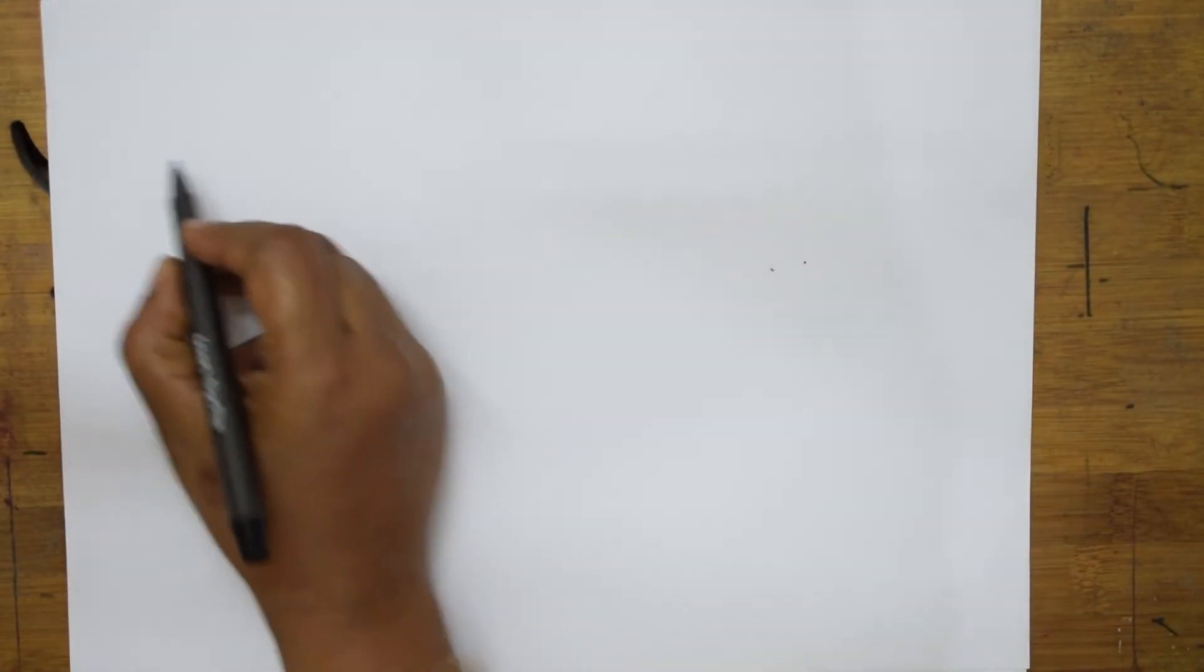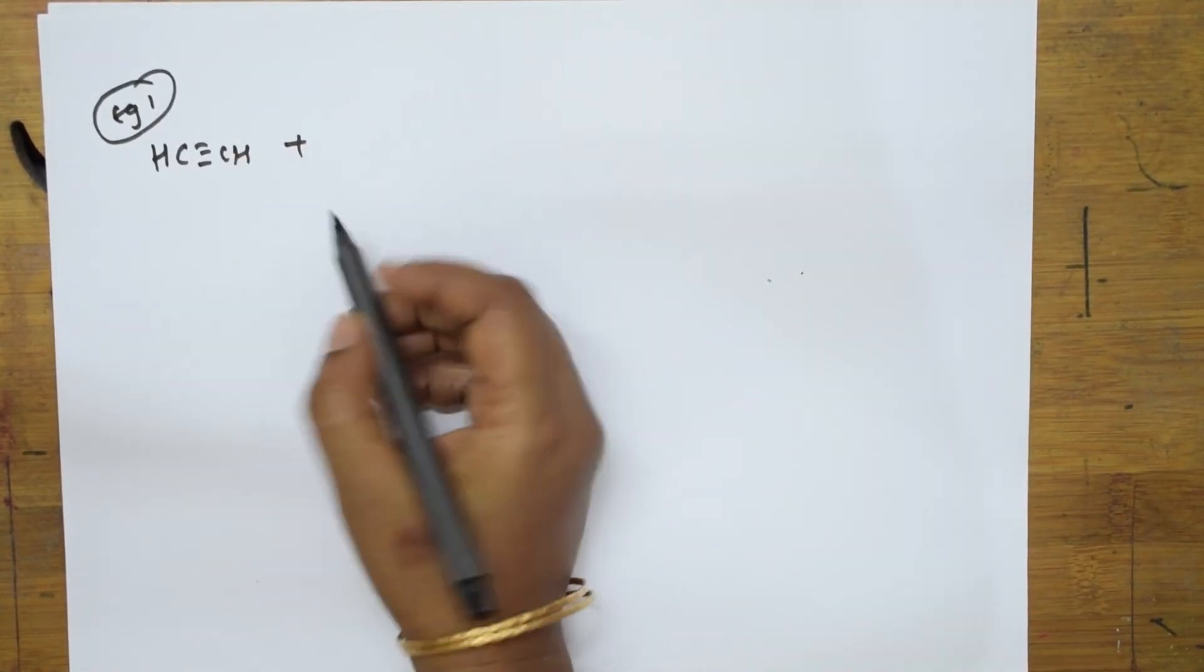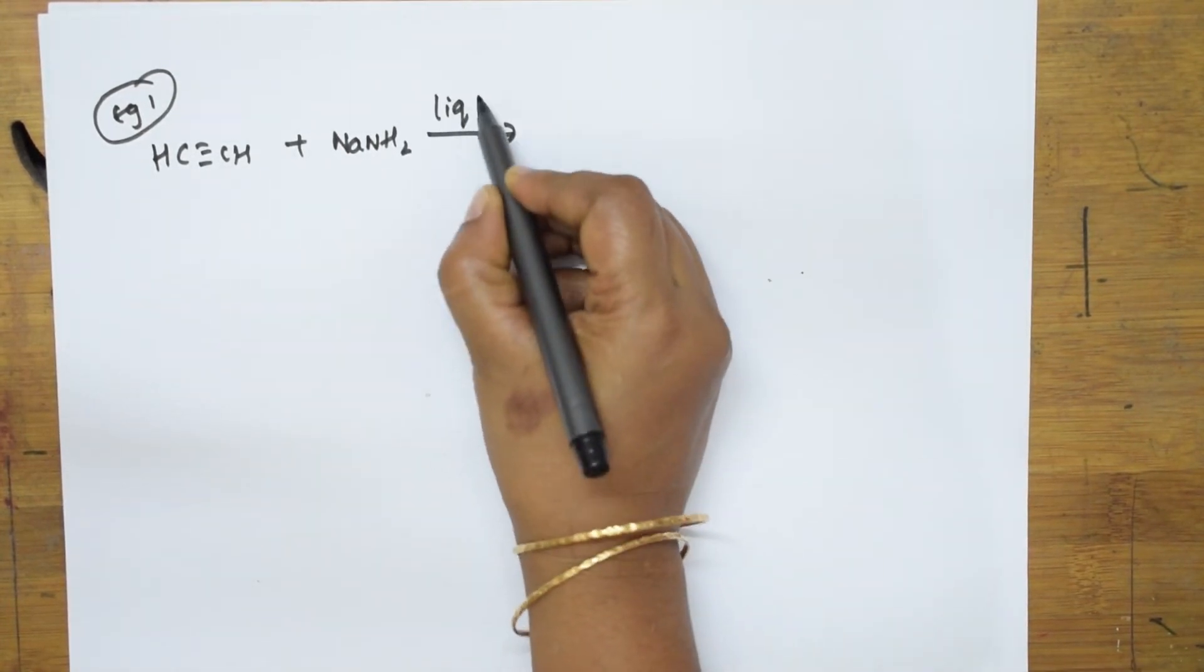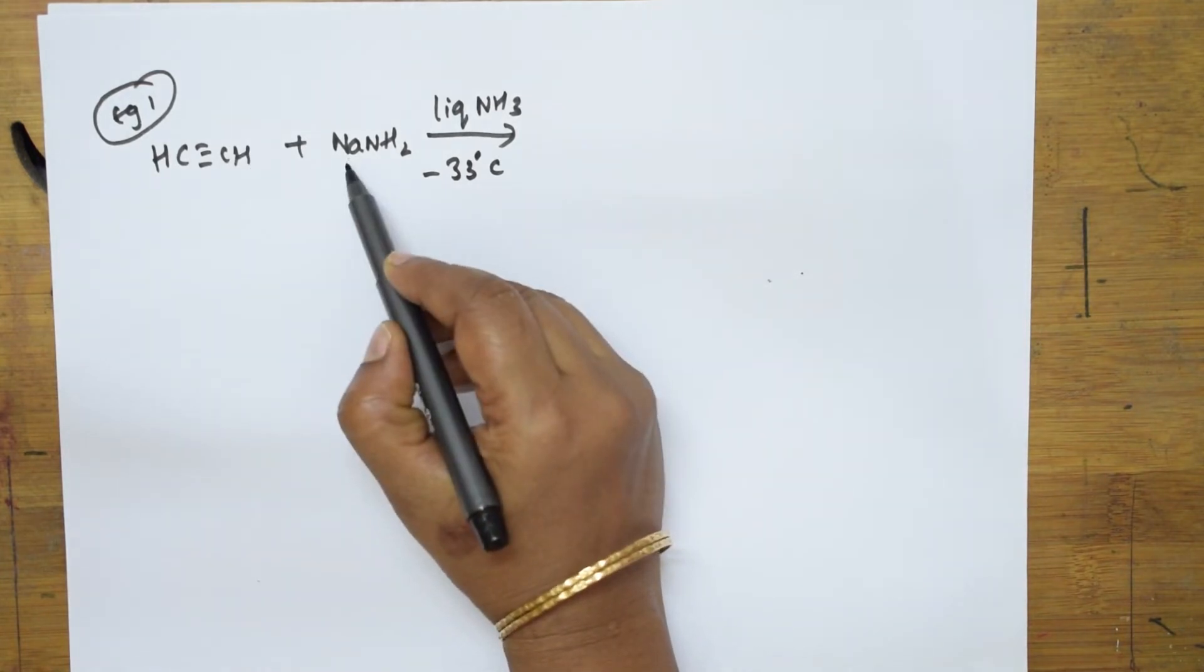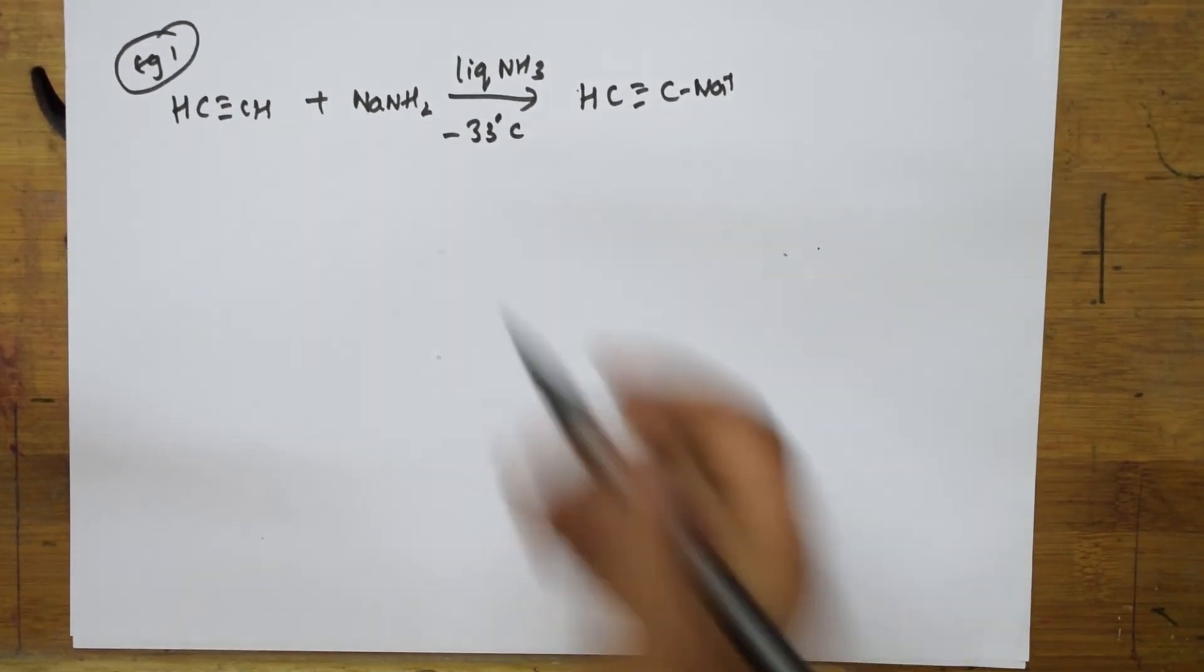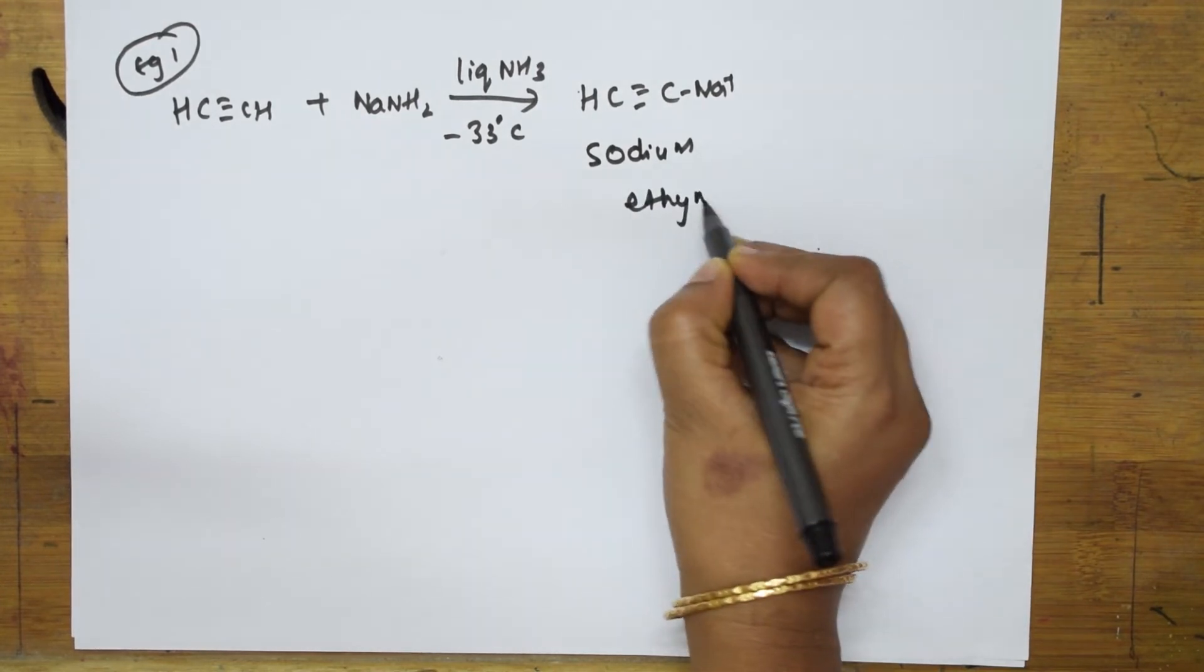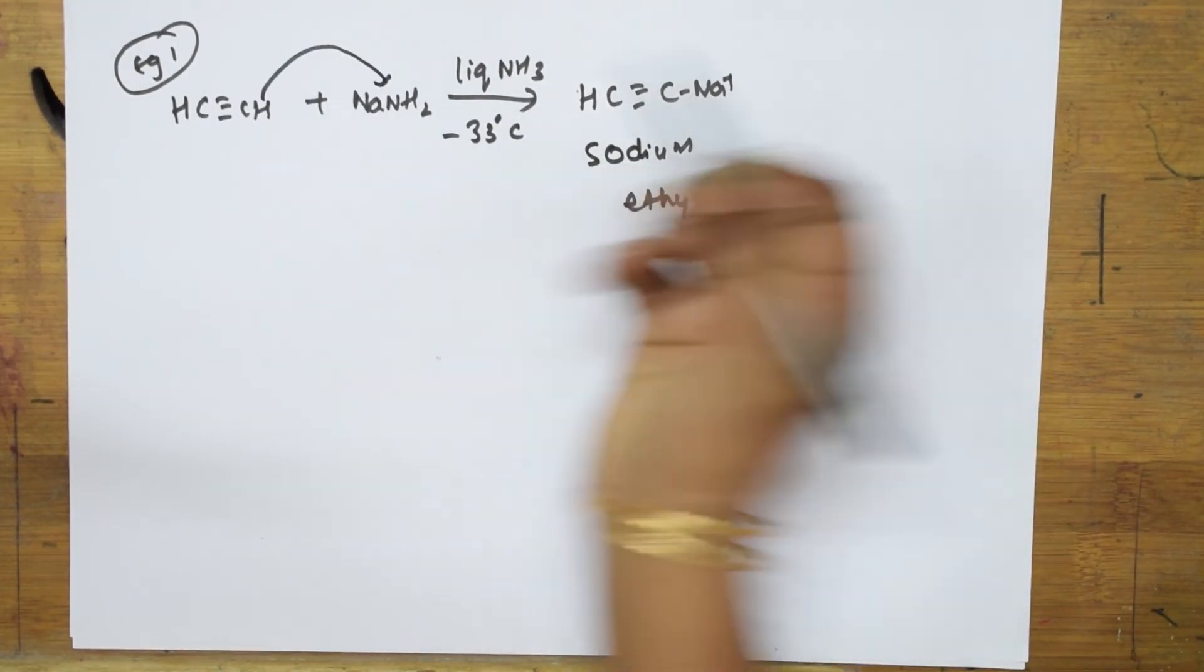With this mechanism let's take examples. Suppose I take acetylene. This is example one. I'm going to introduce NaNH2 sodium amide in the presence of liquid ammonia at minus 33 degrees centigrade. This hydrogen is replaced by sodium, so I get C≡C minus Na plus. The name of this is sodium ethanide. This hydrogen is accepted and we get ammonia.